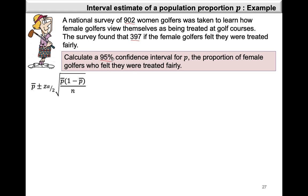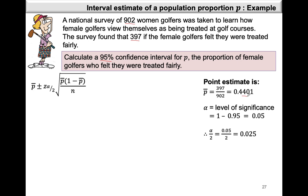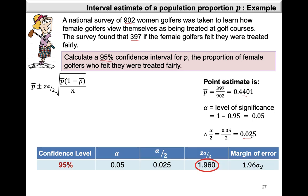Our interval is P-bar plus or minus our margin of error. Our value of P-bar will be 397 divided by 902, our sample size, giving us P-bar equal to 0.4401. Our level of significance is 0.05, which is 1 minus our confidence coefficient, so alpha over 2 will be 0.025. From the table, our Z value will be 1.96.